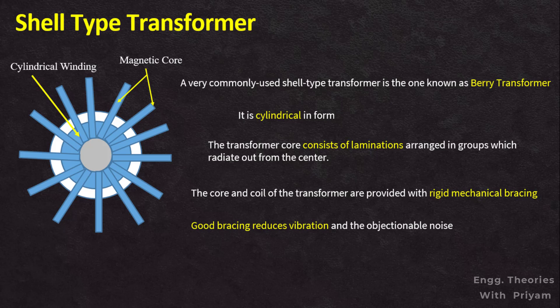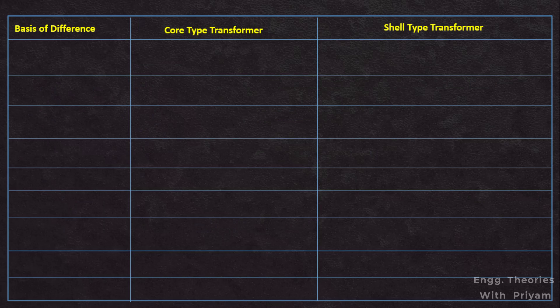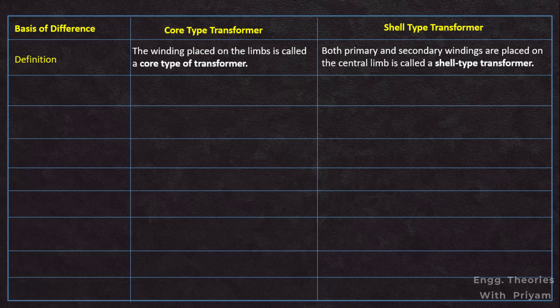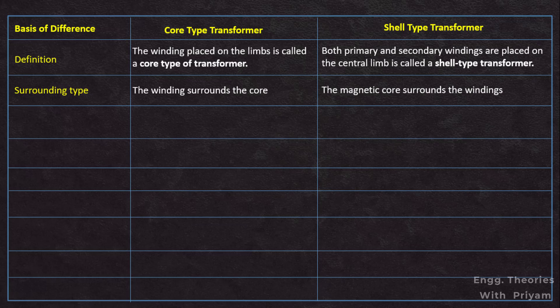Good bracing reduces vibration and humming sound during operation. Now, let's compare core type and shell type transformers. The magnetic circuit of the core type transformer has two vertical sections called limbs and two horizontal sections called yokes, with windings placed on the limbs. The shell type transformer has one central limb and two outer limbs, with both primary and secondary windings placed on the central limb. In the core type, the winding surrounds the core; in the shell type, the magnetic core surrounds the winding.